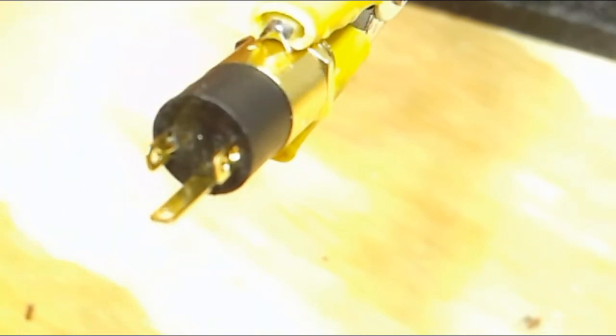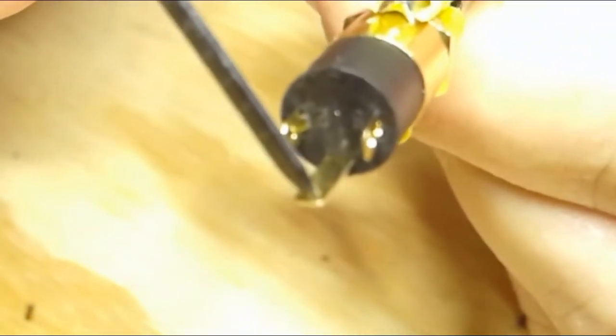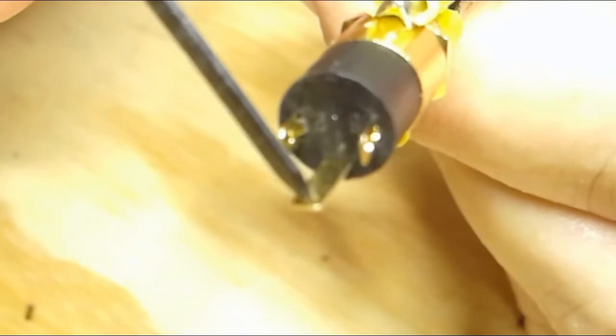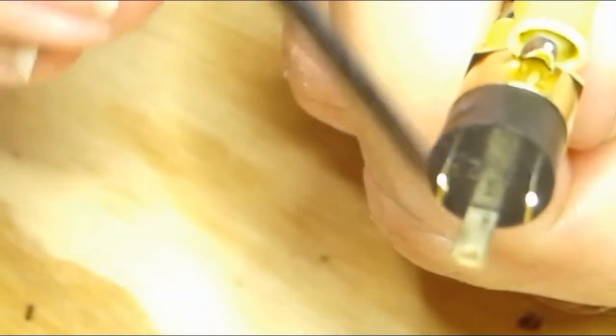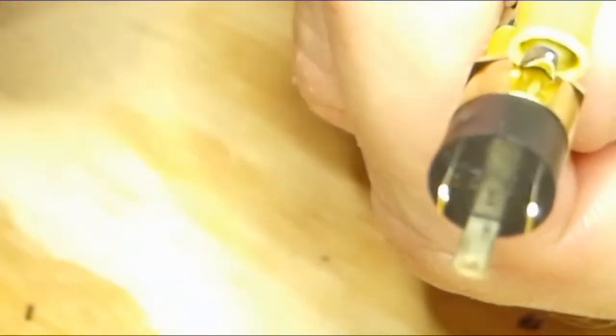And the way you can remember this is that if you look at this with the long pin straight down at 6 o'clock, the tip is at 9 o'clock, and the ring is at 3 o'clock. So you're going to short together 6 and 3 o'clock and run the other wire to 9 o'clock.